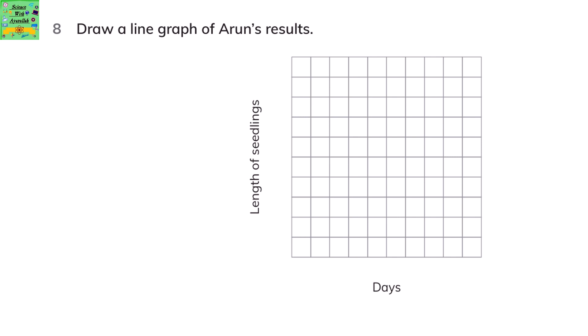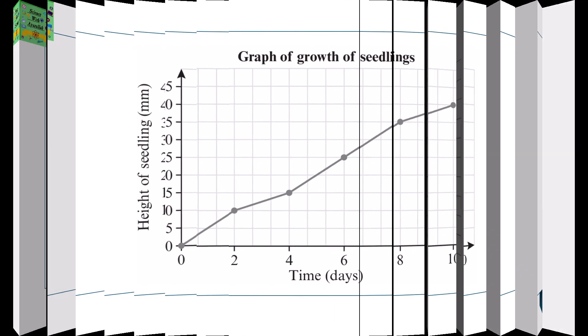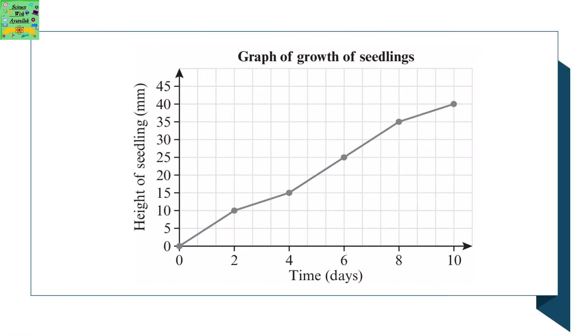Here's a graph and you need to draw a line graph for his results. On the x-axis there are the days and on the y-axis the length of seedlings. This is the graph with the answer.